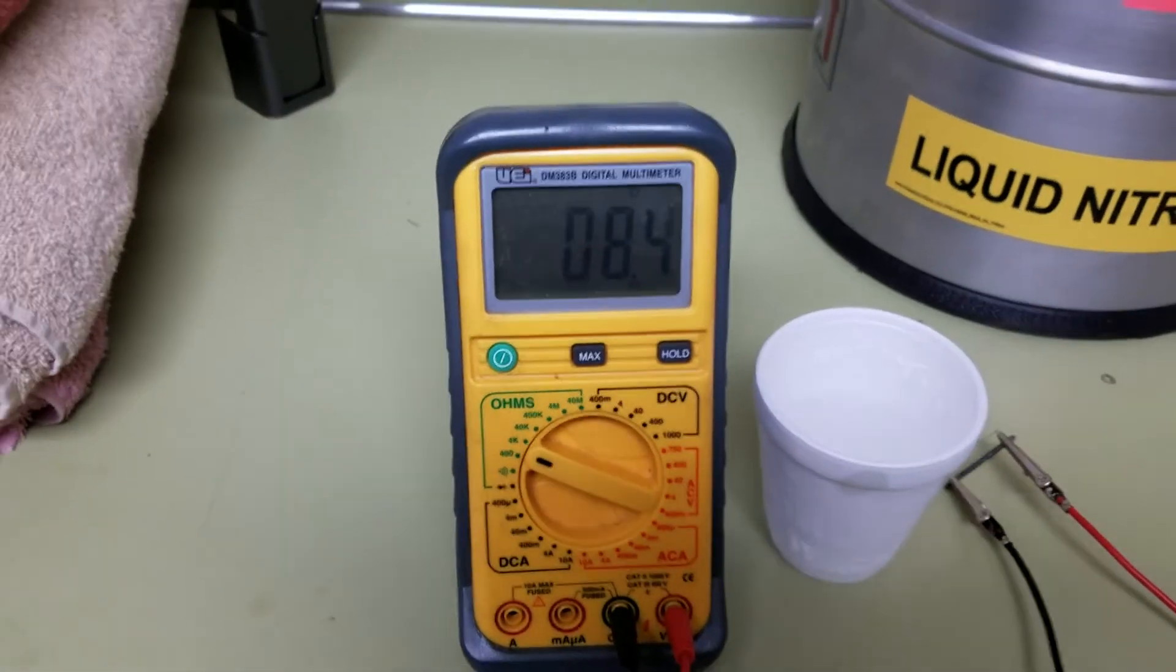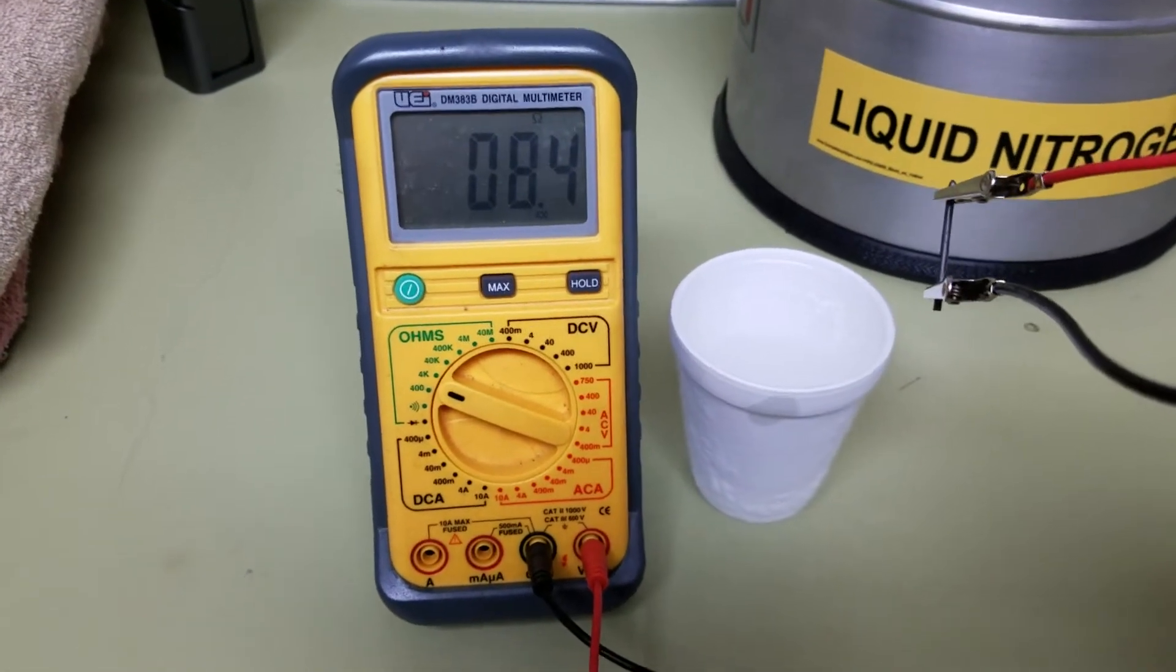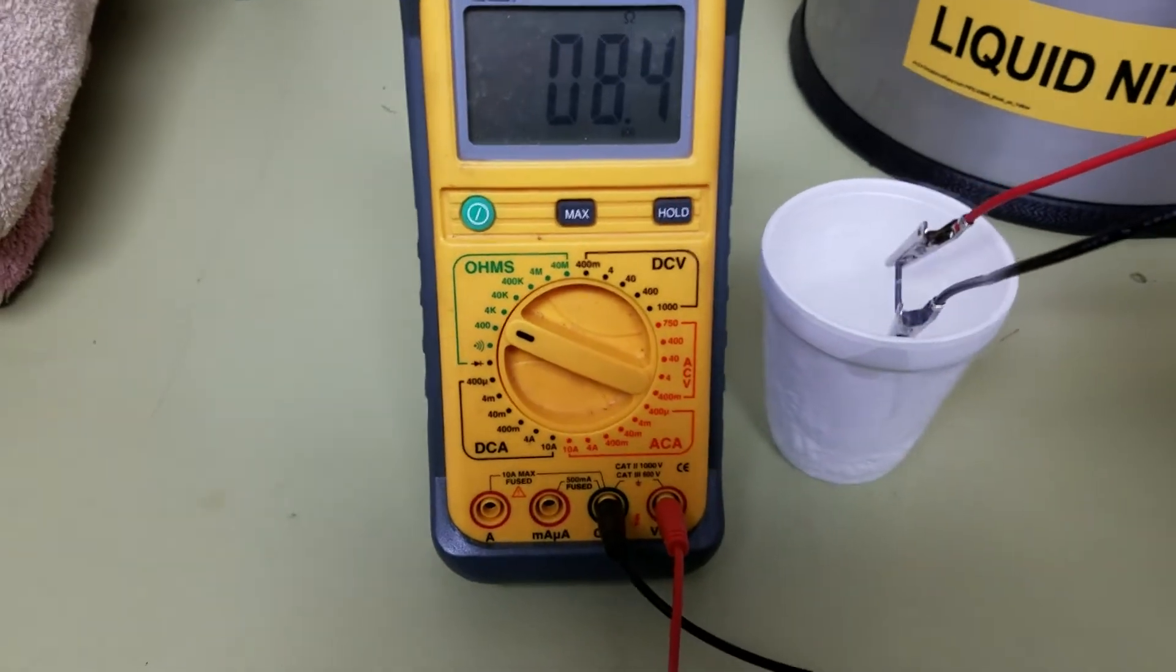Anyway, let's see what happens to the resistance of a piece of graphite when we cool it to 300 below. Alright, here we go.